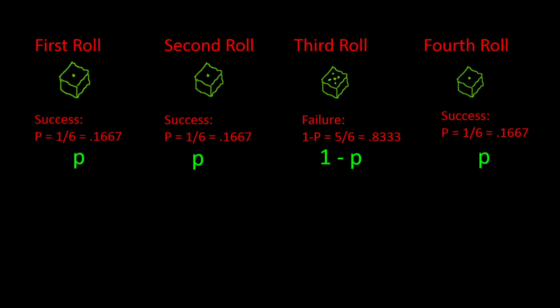Property 2 is that each observation must be classified into one of two mutually exclusive and collectively exhaustive categories called a success or a failure. Let's define a success as rolling a 1, then a failure is not rolling a 1 — rolling one of the other faces of the die instead. Those are two mutually exclusive and collectively exhaustive categories, so property 2 is satisfied.